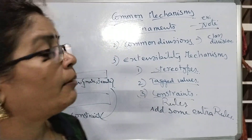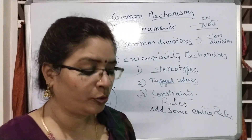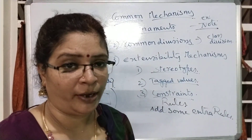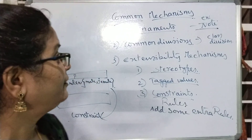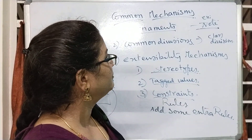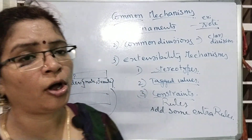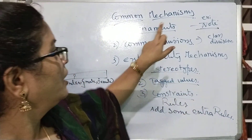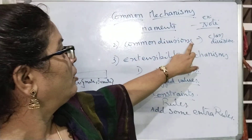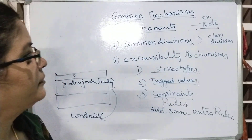These are the common mechanisms that we use in UML. Once again, let us see what the common mechanisms are. There are normally three different kinds of common mechanisms: adornments, common divisions, and extensibility mechanisms.